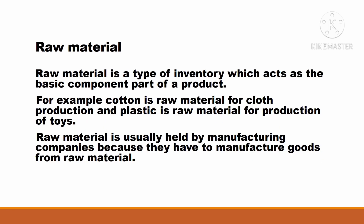Now we look at raw materials. Raw material is a type of inventory which acts as the basic components or parts of a product. For example, cotton is a raw material for clothes production, and plastic is a raw material for production of toys. Raw materials are usually held by many manufacturing companies because they have to manufacture goods from raw materials.